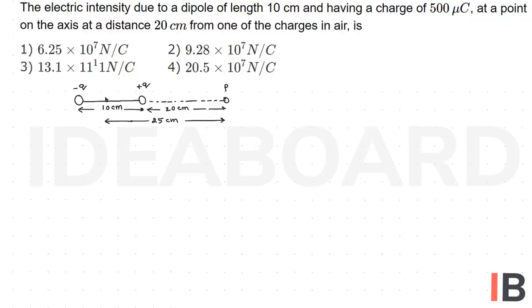And we know electric field intensity along the axial line of the dipole is equal to, you know, expression 1 by 4 pi epsilon not 2 P r by root over r square minus L square whole square.